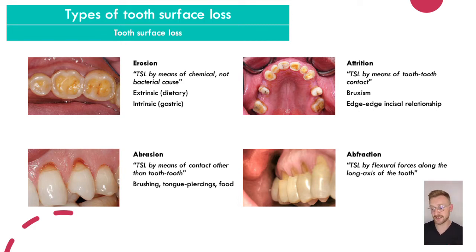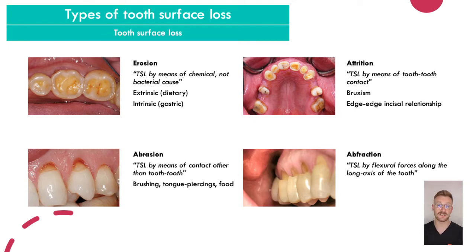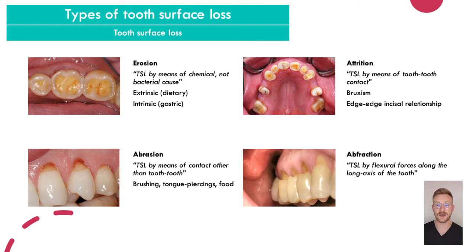The four bread-and-butter etiologies of tooth surface loss are erosion, attrition, abrasion, and abfraction. Erosion is tooth wear caused by chemical — acid wear — but not from a bacterial cause. It comes from two sources: extrinsic, which are dietary acids like citrus fruits, fizzy drinks, beer, and wine; or intrinsic acids that come from within, such as in patients who vomit frequently due to bulimia, or patients with acid reflux. These present slightly differently.